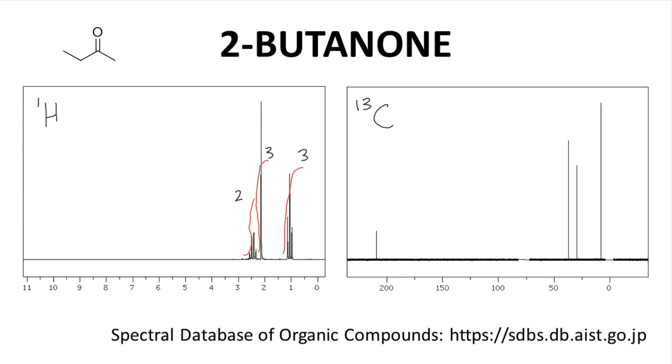The relative areas for these peaks are 2, 3, and 3, which correspond to the number of hydrogens that give rise to each of these signals, the quartet, the singlet, and the triplet, respectively.